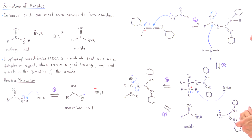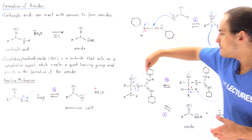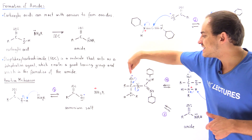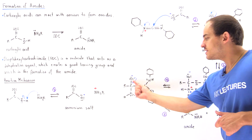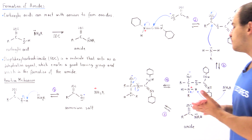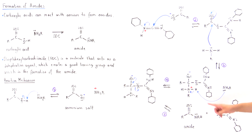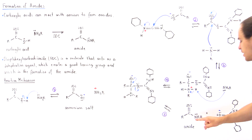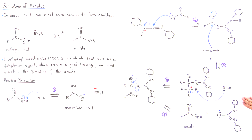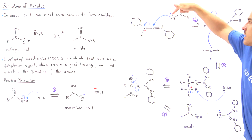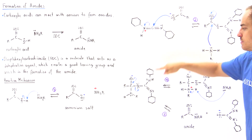In the final step, an elimination reaction takes place. The oxygen forms a pi bond between the oxygen and the carbon, displacing and kicking off the good leaving group that was formed as a result of the DCC molecule. In the final product, we have the amide formed by replacing the hydroxy group with the nitrogen-containing group, and we also form a DCU anion from the DCC molecule that was attached to the oxygen.